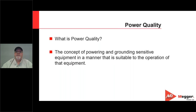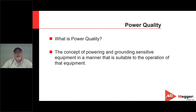I hear many people give many different explanations about it. The IEEE definition of power quality is the concept of powering and grounding sensitive equipment in a manner that's suitable for the operation of that equipment. What it means is that if I have a piece of equipment that's working fine, it doesn't have a power quality problem. However, if I have a piece of equipment that's overheating, tripping out, having issues due to the incoming power, then I do have a power quality problem.